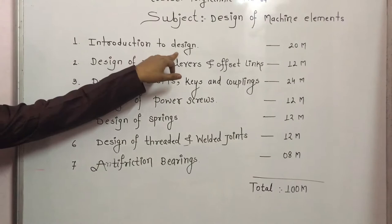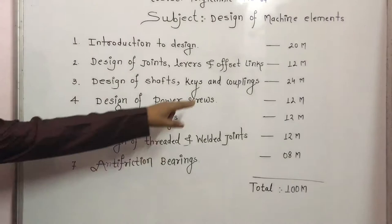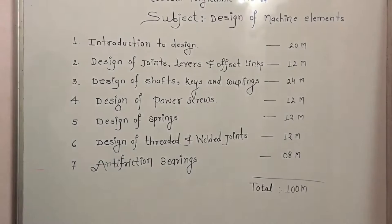This chapter is given for 20 marks. The weightage of this chapter is about 20 marks. Next one is Design of Joints, Levers, and Offset Links, and the weightage of this chapter is 12 marks.